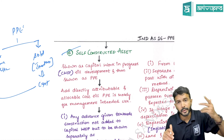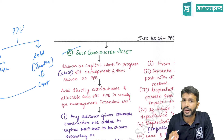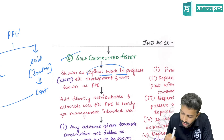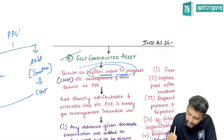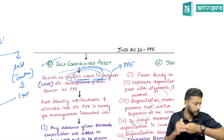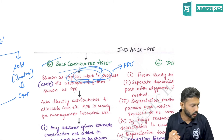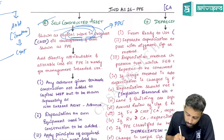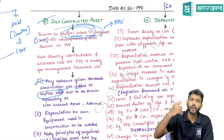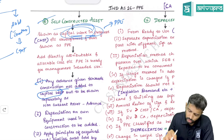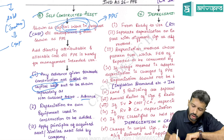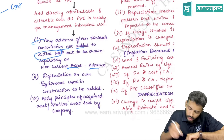If an asset under construction takes more than one year to complete, you cannot show it as PP immediately. It must be shown as Capital Work in Progress (CWIP) in the balance sheet until it is ready for use, at which point it is transferred from CWIP to PP. If you have given an advance before construction starts, do not show it as CWIP — show it as an advance only. Only when actual work starts does the cost get classified as CWIP.